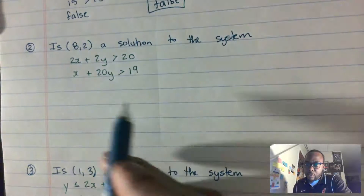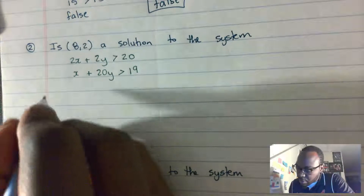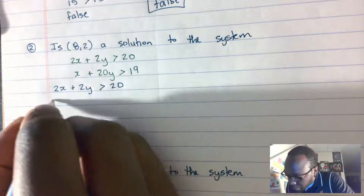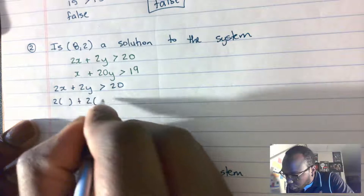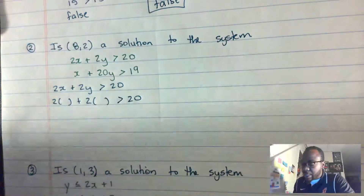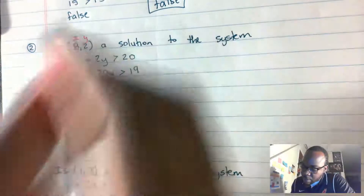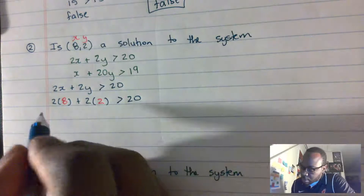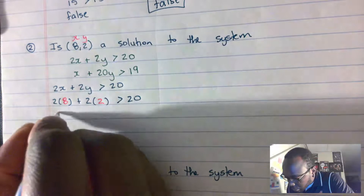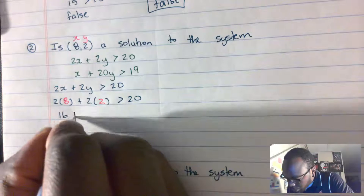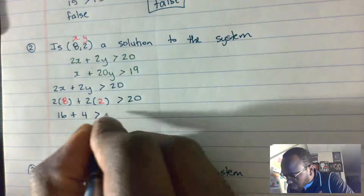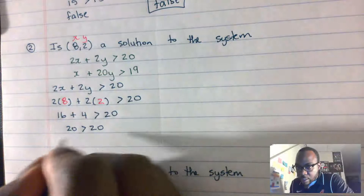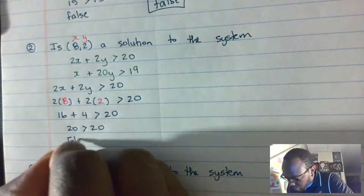Both statements have to be true. Let's look at our second example: is (8,2) a solution to the system? We have 2x + 2y > 20. So two times x plus two times y is greater than 20. We know x is 8 and y is 2, so: 2 times 8 is 16, plus 2 times 2 is 4, greater than 20.